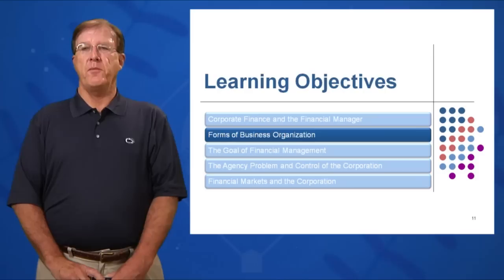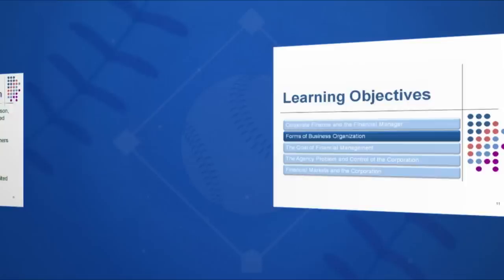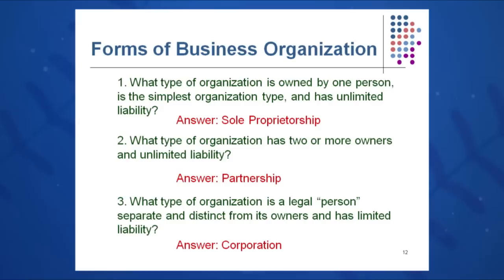Our second learning objective in session one covers the forms of business organization. What kind of business organization can I form if I decide to start a company? What type of organization is owned by one person, a single person, and is the simplest organization type to form with unlimited liability?